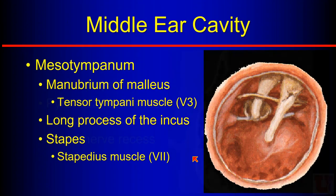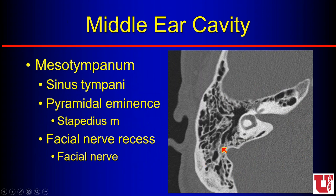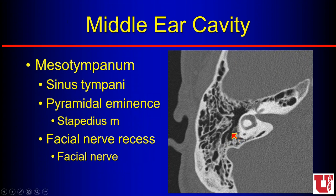On the back wall of the middle ear cavity there are three important areas. The facial nerve recess is an air-filled recess next to the descending or mastoid segment of the facial nerve. Immediately medial to that is the pyramidal eminence, where the stapedius muscle arises. The region from the oval and round windows over to the pyramidal eminence is called the sinus tympani. These are especially important in pathology like cholesteatoma — the surgeon approaching through the external auditory canal has difficulty seeing these structures, so it is the radiologist's job to mention residual disease there.